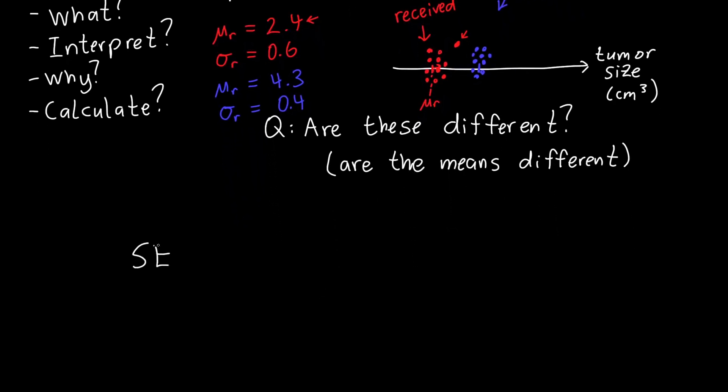The standard error we can calculate as the sample standard deviation divided by the square root of the number of samples that we took. In the case of the patients that received the treatment, our standard error is just 0.6 divided by the square root of 10, which is about 0.2. This tells us what the error is in our estimation of the mean.